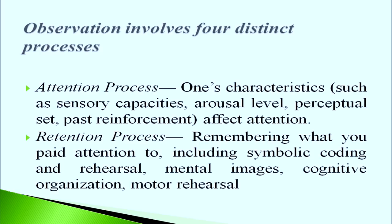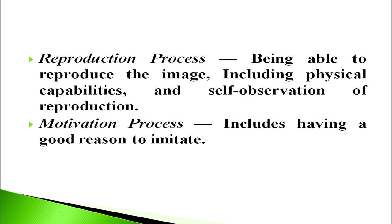Observation involves four basic processes. First is the attention process — one's characteristics such as sensory capacities, arousal level, and perceptual set, as well as past reinforcement, affect attention. Second is the retention process — remembering what you paid attention to, including symbolic coding, rehearsal, mental images, cognitive organization, and motor rehearsal. Third is the reproduction process — being able to reproduce the image which you have retained previously, including physical capabilities and self-observation of reproduction. Fourth is the motivation or reinforcement process — having a good reason to imitate; the person should have some purpose to imitate. I will now show all these processes through a video.